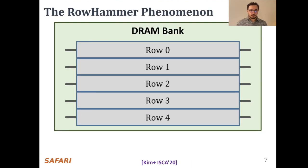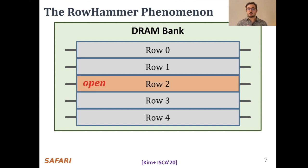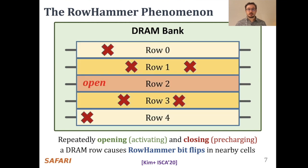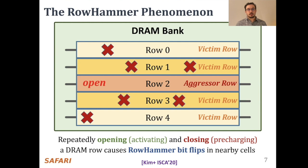Let's look at the row hammer phenomenon next. In order to access data from a DRAM row — say row 2 in this case — the memory controller must first open or activate the row. After all requests are serviced from row 2, the memory controller must close or pre-charge the row in order to begin accessing data from another row. Due to an increase in cell-to-cell interference, rapidly activating and pre-charging a DRAM row can result in bitflips in physically adjacent rows. Continuing to access the same row results in even more failures in nearby rows. This phenomenon is known as row hammer. We refer to the rapidly accessed row as an aggressor row and the rows containing bitflips as victim rows.